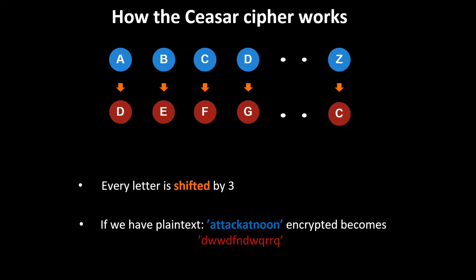If we have plaintext 'attack at noon,' then encrypted this becomes something unreadable. We can notice that A shifted forward by three becomes D, and similarly T shifted forward by three is W. If we have this ciphertext, we can quite easily map it back to the original message by subtracting the shift.